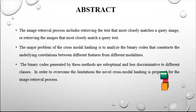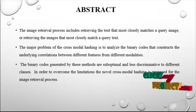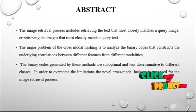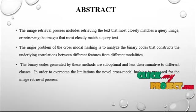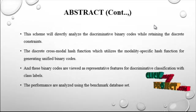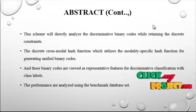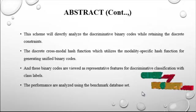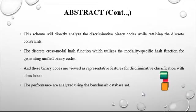A search using a combination of text and images. The major problem of cross-modal hashing is to analyze the binary codes that capture the underlying correlations between different features from different modalities. Recent approaches fail to explore the discriminative property of class labels during hash function learning, so the binary codes generated by these methods are suboptimal and less discriminative to different classes.